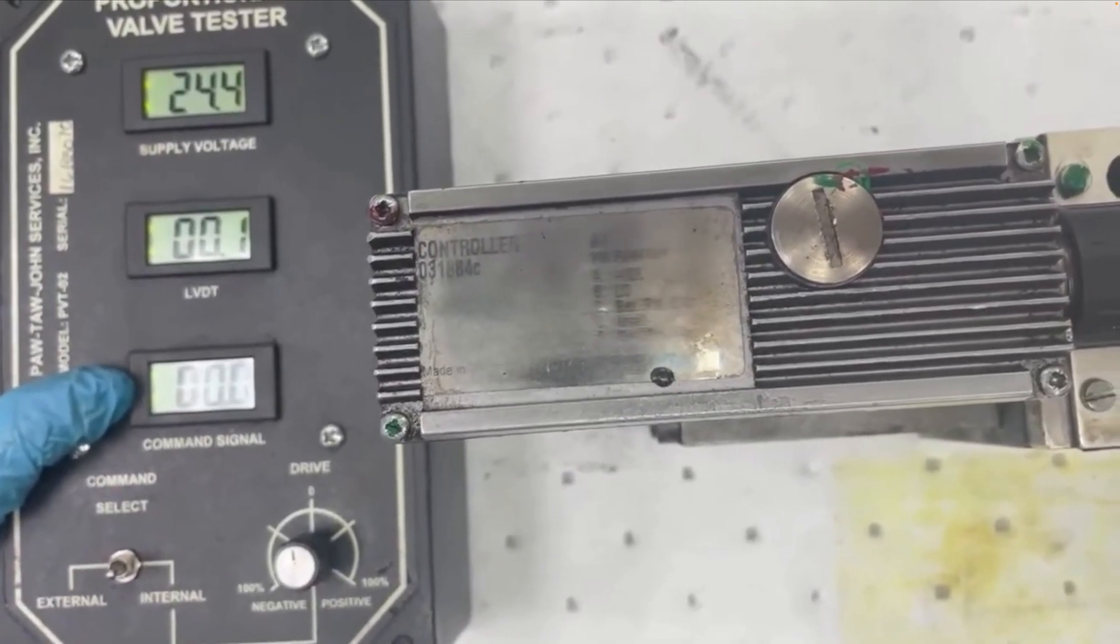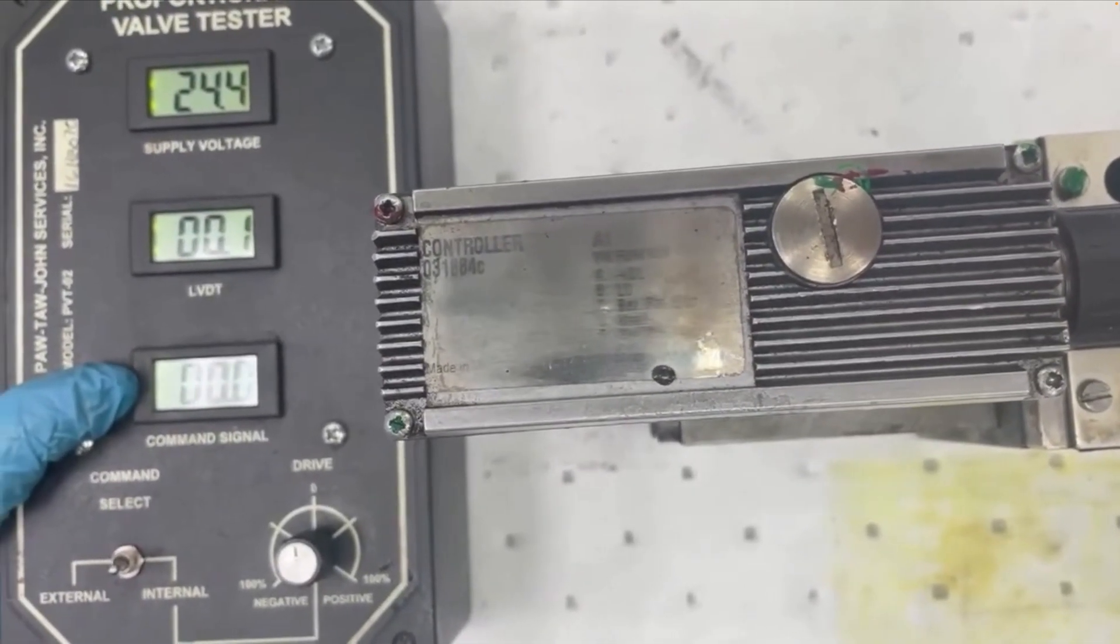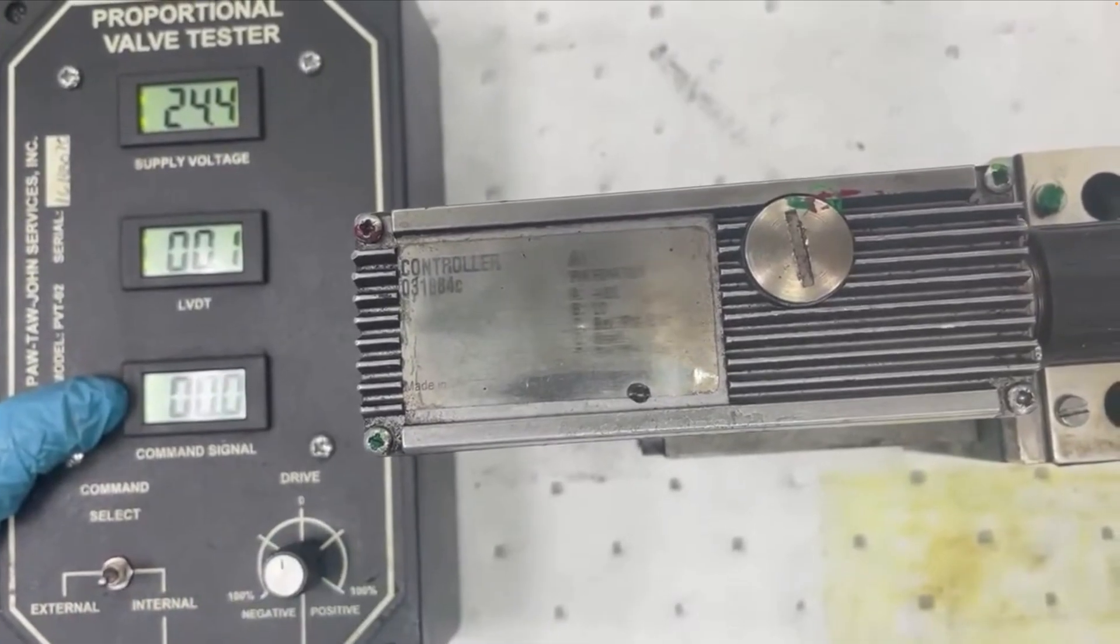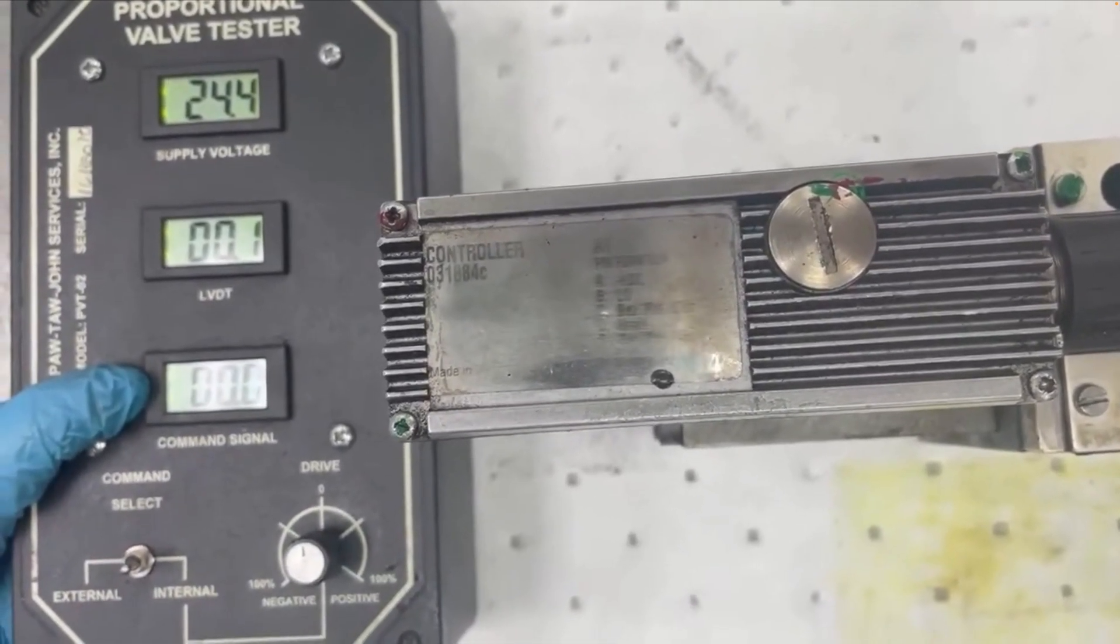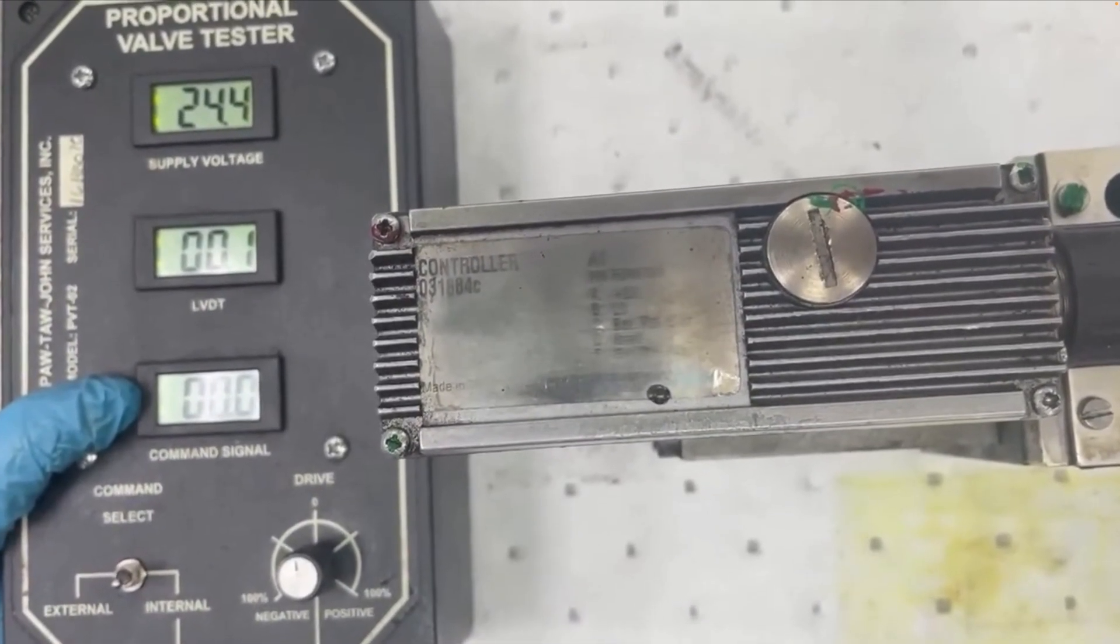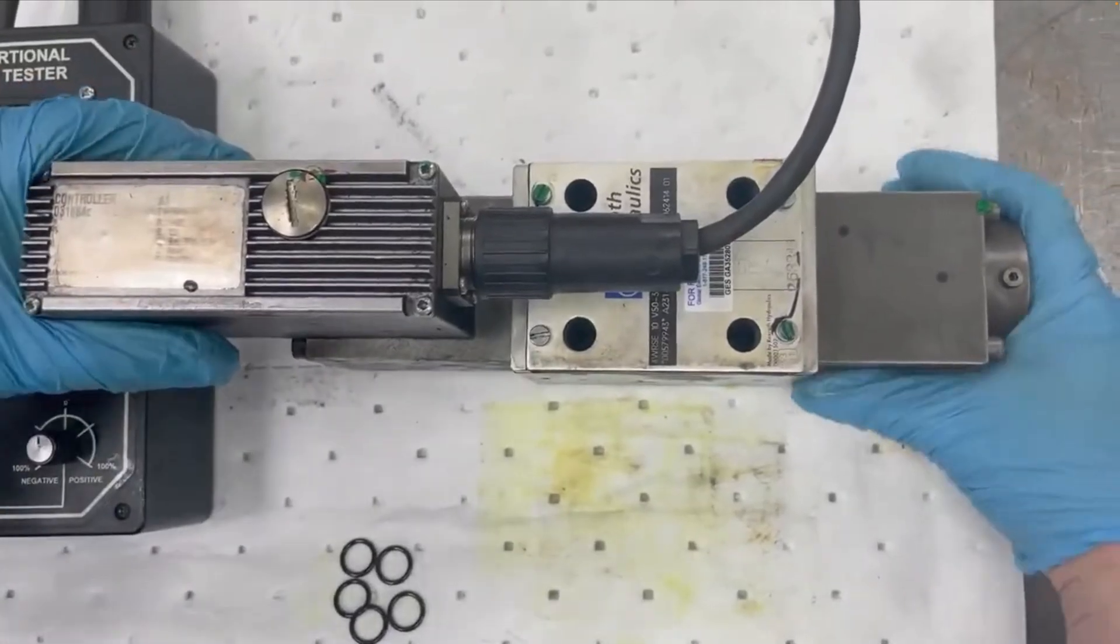So this valve takes a plus or minus 10 volt command signal which we can adjust here, and this command signal should shuttle the valve back and forth. We'll go ahead and demonstrate this.